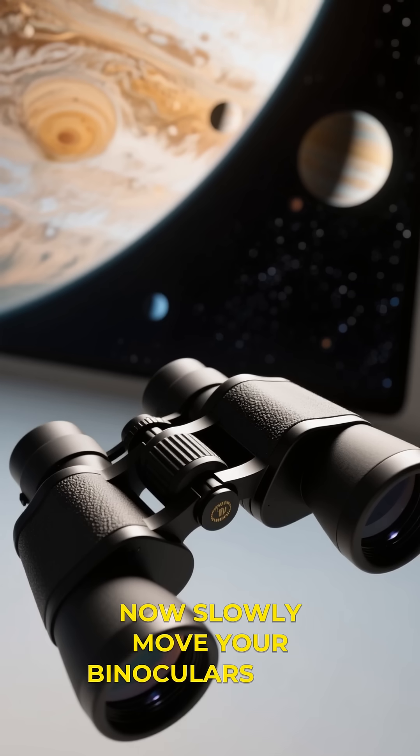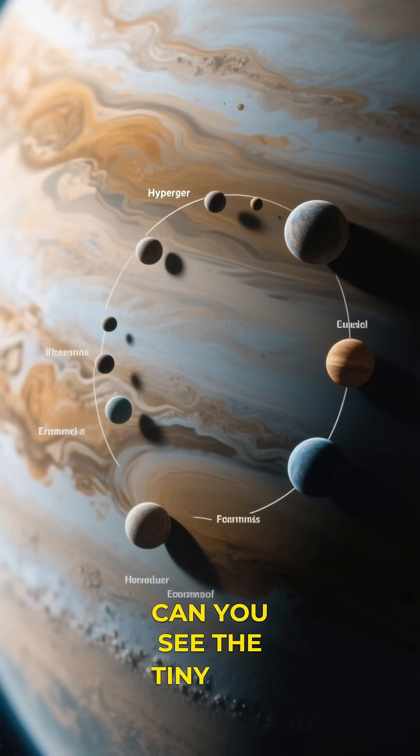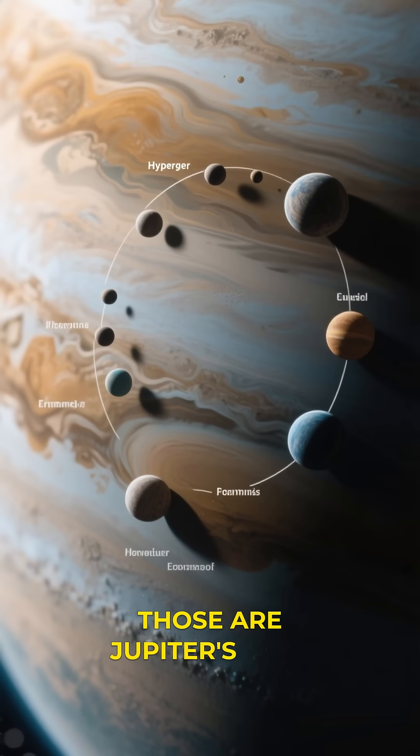Now slowly move your binoculars across the screen from left to right. Can you see the tiny dots? Those are Jupiter's moons.